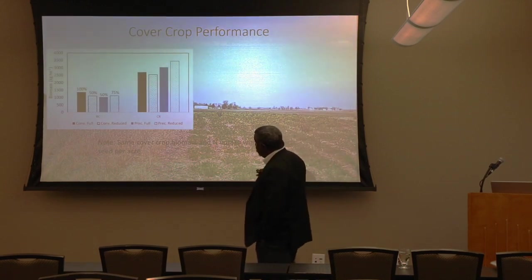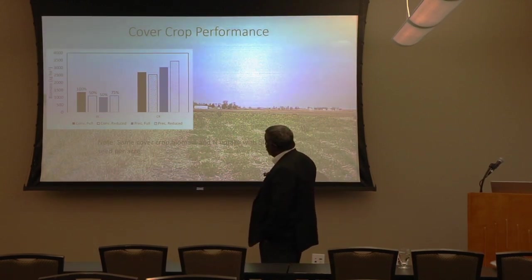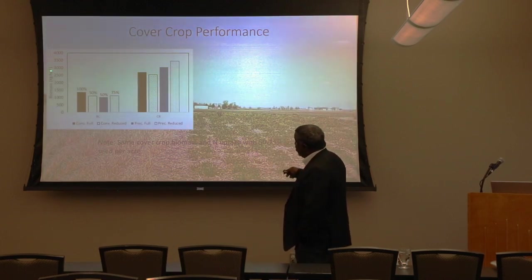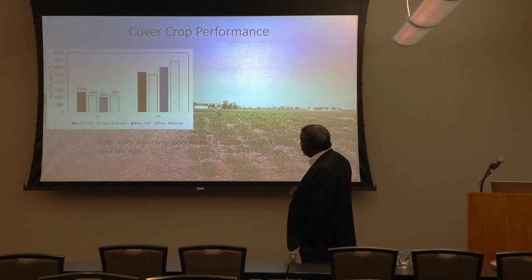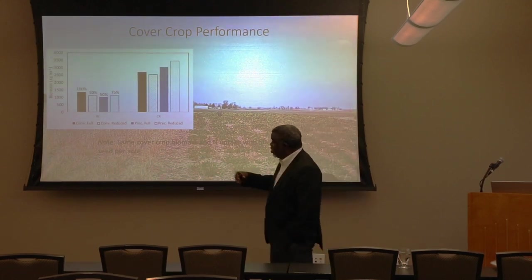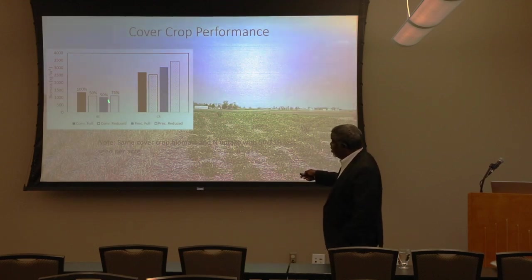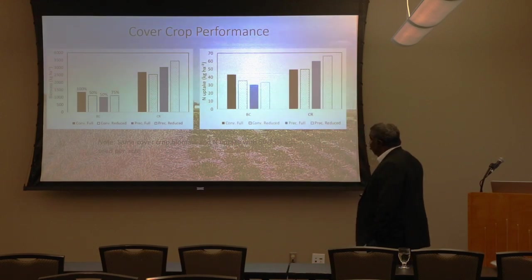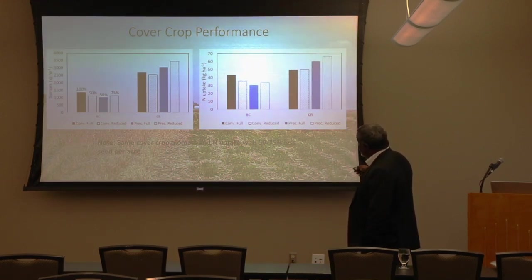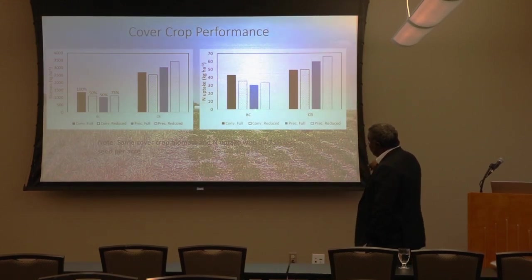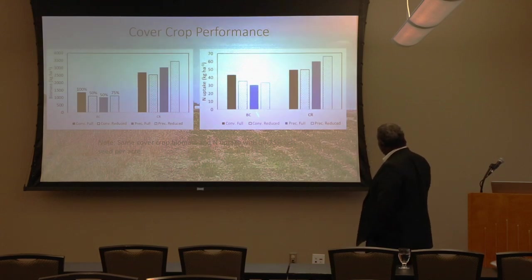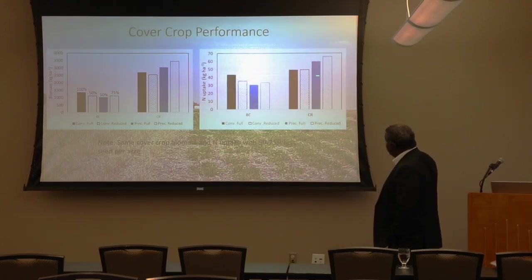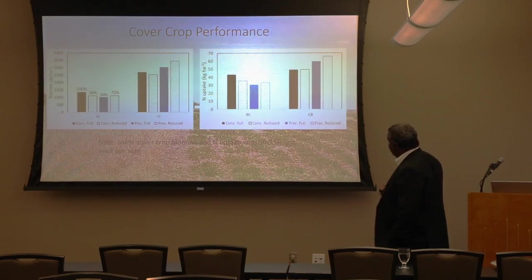With cereal rye, you saw the same trend — no significant difference between full/reduced rate or conventional/precision planted. Cereal rye had greater biomass, around 2,700 kilograms per hectare, because it's more cold-tolerant in central Illinois. For nitrogen uptake, no treatment differences on average: Balanza Clover had about 30 pounds per acre — remember that — and cereal rye had about 50 to 55 pounds per acre.